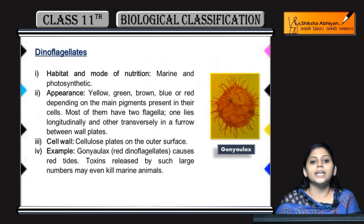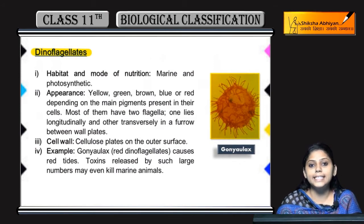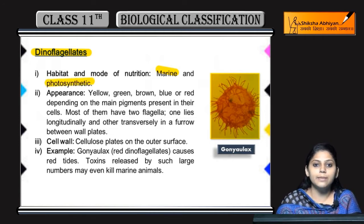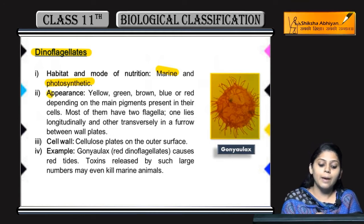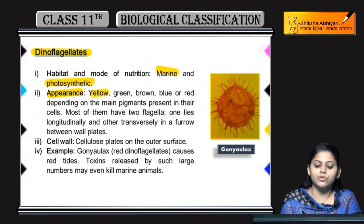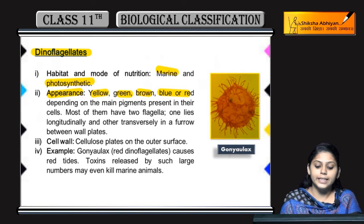Next, coming to dinoflagellates. Inka habitat or mode of nutrition kya hai? Yhe marine water mein rahte hai aur inka nutrition is photosynthetic — yhe bhi apna khana khud banate hai with the help of sunlight. Appearance kaisi hoti hai? Yhe bahut hi different different colors ke hote hai — kuch yellow, kuch green, kuch brown, blue, aur red hote hai, due to the pigment present in them.